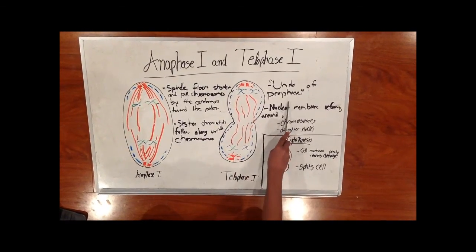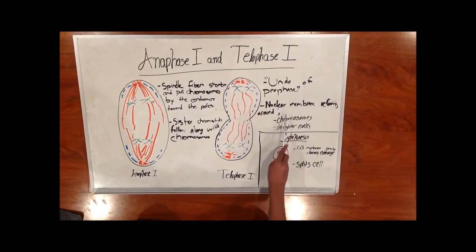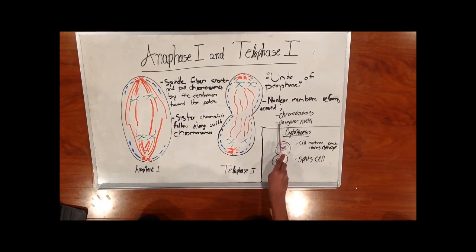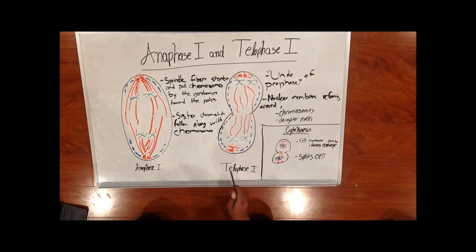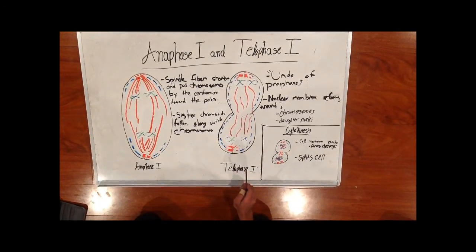Here, whatever is done in prophase is undone. The nuclear membrane reforms around the chromosomes and the daughter nuclei. Now each of the nuclei contains two sister chromatids for each chromosome. They're attached by a common centromere.